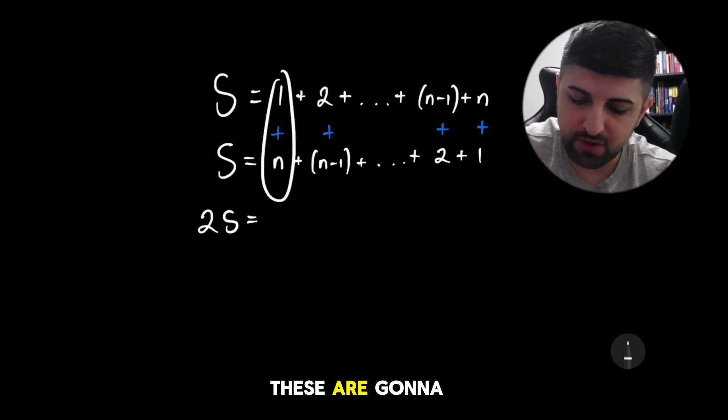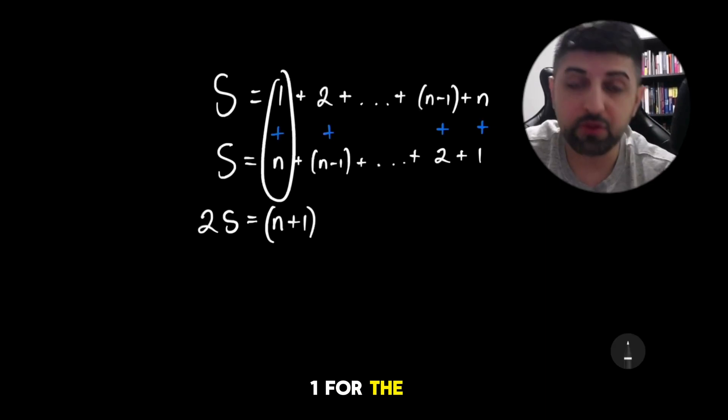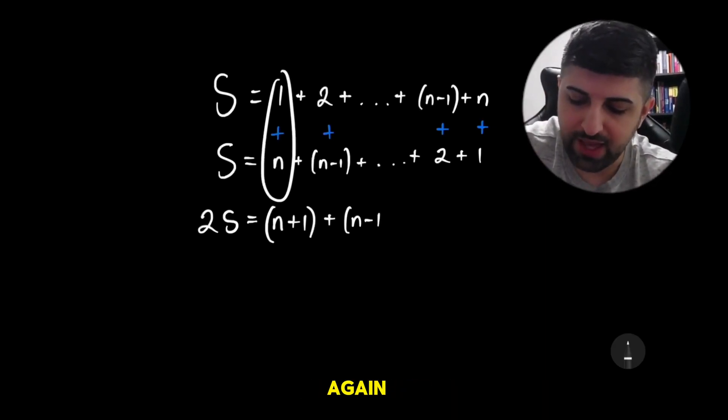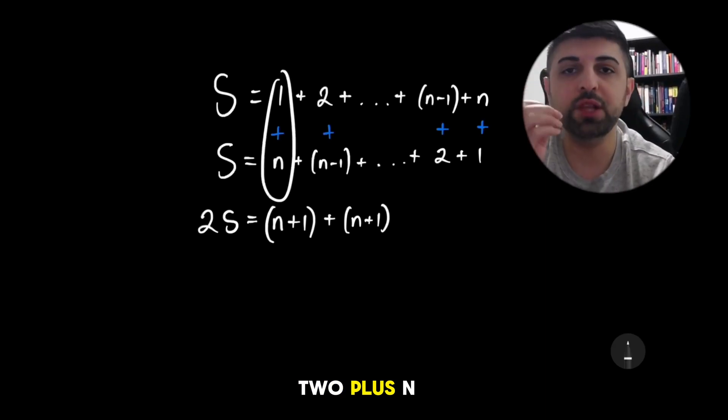And each of these are going to be n plus 1. So I'm going to get n plus 1 for the first sum vertically. I'm going to get n plus 1 again, because I'm doing 2 plus n minus 1.